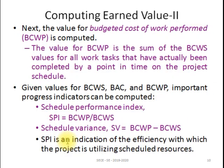Next, we calculate the Budgeted Cost of Work Performed (BCWP). The value of BCWP is the sum of BCWS values for all work tasks that have actually been completed by a given point in time on the project schedule. At any given point, whatever tasks have been completed — their BCWS values are taken and summed to give BCWP, the Budgeted Cost of Work Performed.